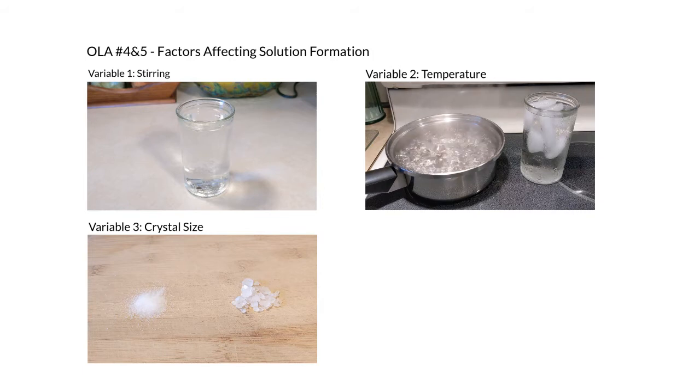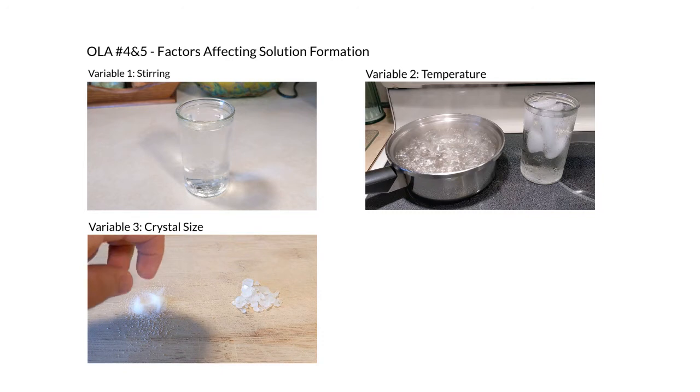The third variable you'll examine is crystal size. Ionic compounds exist as small pieces or crystals. These crystals can be different sizes. For example, table salt has smaller and finer crystals, while ice cream salt has much larger and coarser crystals. We want to see how this size difference affects the rate of solution formation.